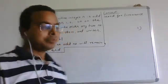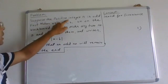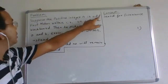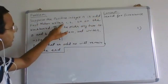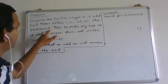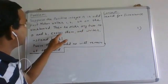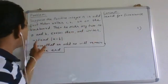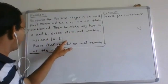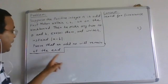Hi friends, here is the problem. Suppose the positive integer n is odd. First Mohan writes 1, 2, 3 up to 2n on the blackboard. Then he picks any two numbers a and b, erases them and writes instead modulus of a minus b.